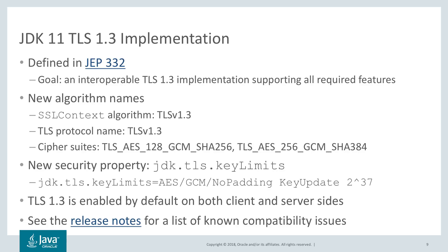Here is an example. The property value consists of the name of the algorithm — in this case, AES/GCM/NoPadding — followed by a KeyUpdate, which is the TLS message that will be sent once the limit is reached, and then the limit itself, which is an integer value in either bytes or as a power of two. TLS 1.3 is enabled by default on both the client and server sides, so there's nothing you need to do to specifically enable it — it will be used if both sides support it. There are a few compatibility issues you may encounter when upgrading to TLS 1.3; you should check the release notes or the JEP to see if any of these issues may affect your application.